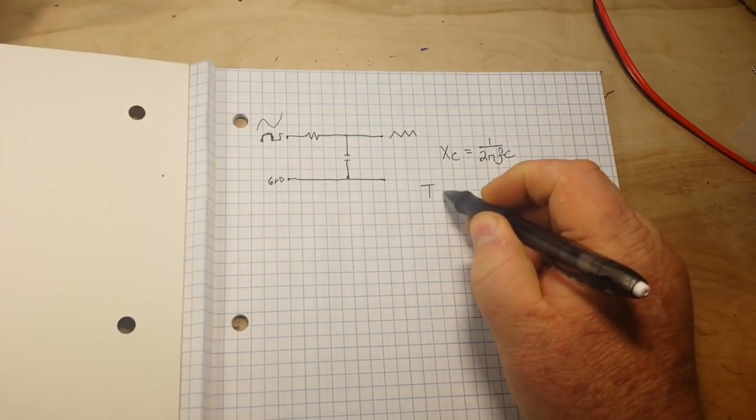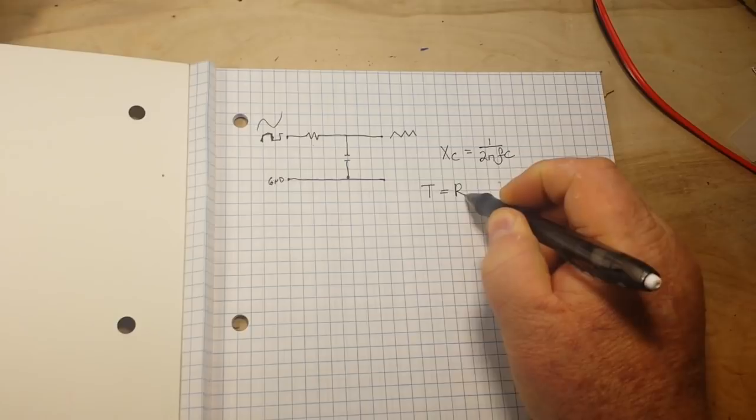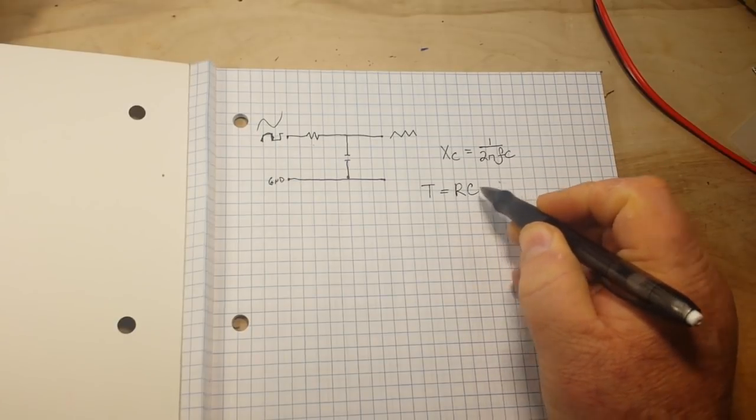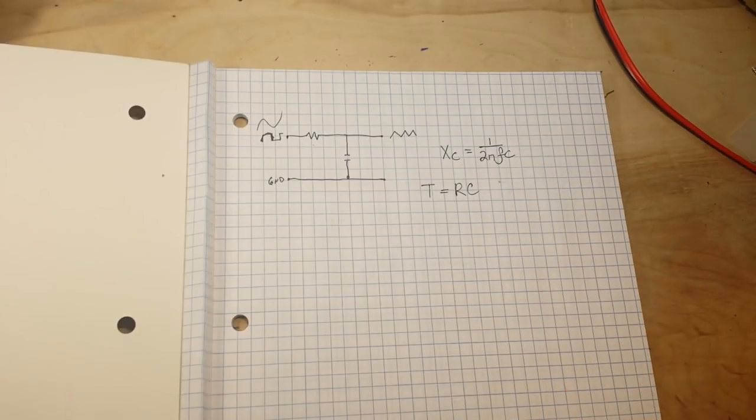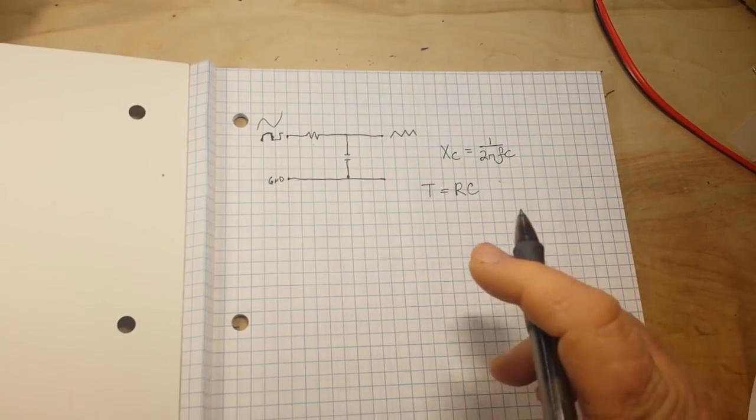And that is T equals R times C, resistance times capacitance. And you can see how that fits into our formula up here.